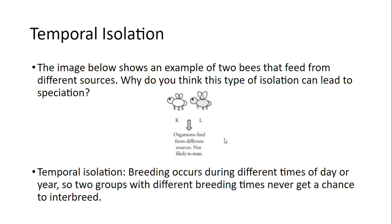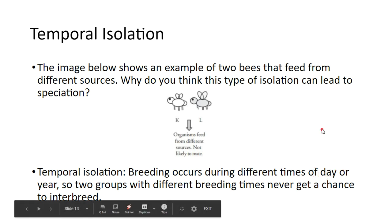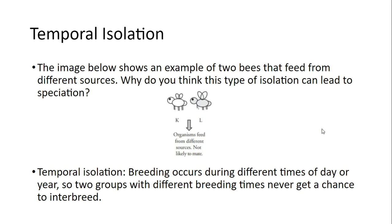Over time, one species of bee can become two because they become temporally isolated. For example, deer typically reproduce during a specific mating season. But deer in North Carolina and deer in Texas may have slightly different reproductive times based on the climate of that region, so those two populations might become temporally isolated. Another example is flowers, which will typically release pollen during different points of the day in order to increase sexual reproduction and gain more genetic variation.